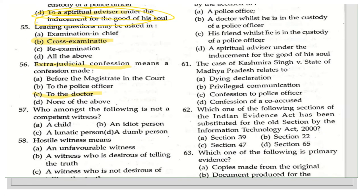The next question asks: who among the following is not a competent witness? The options are: a child, an idiot person, a lunatic person, or a dumb person. The right answer is an idiot person — an idiot person cannot be a competent witness. This is covered under Section 118 of the Indian Evidence Act.